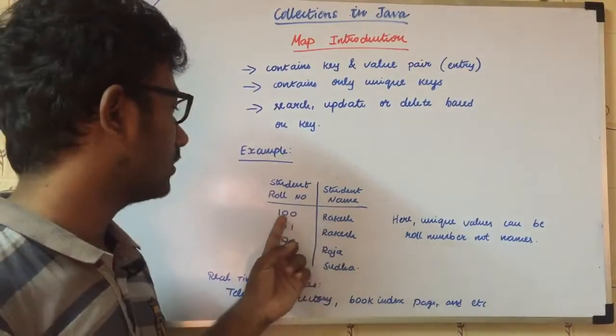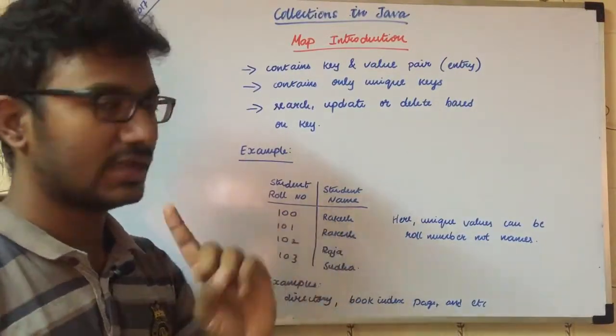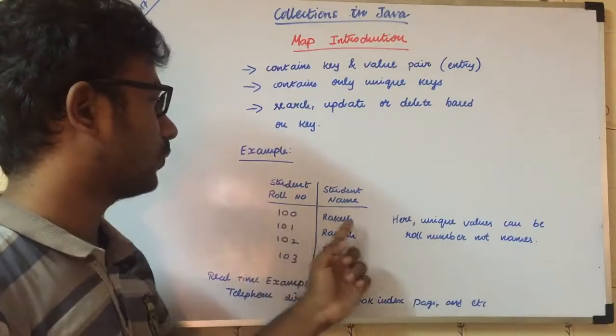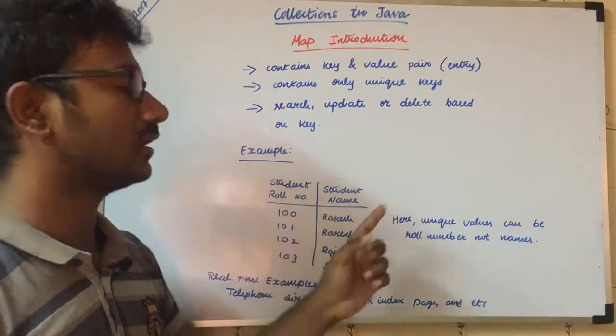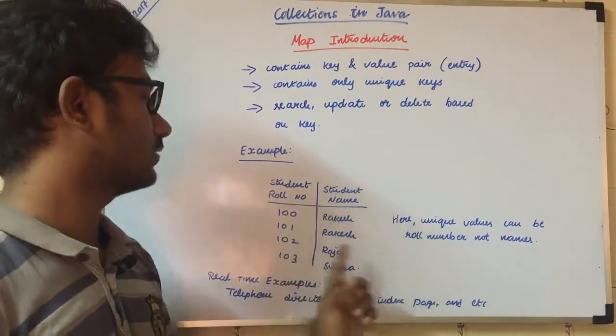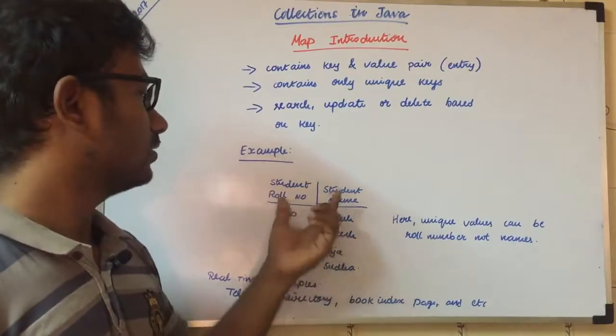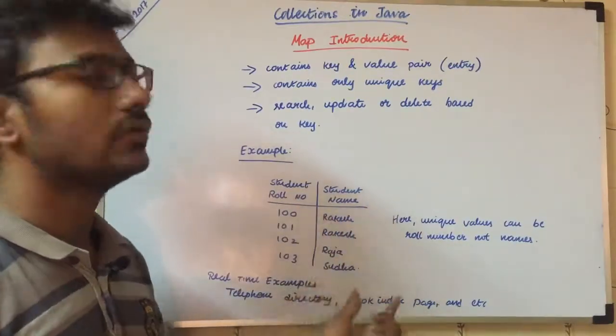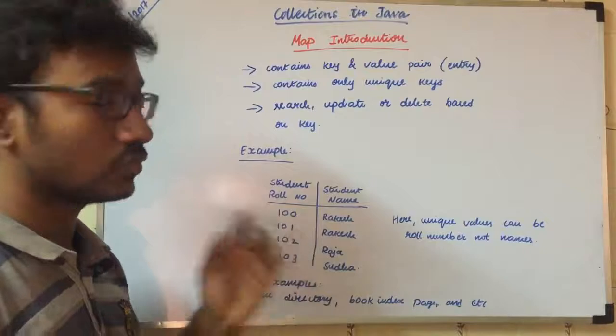Multiple unique numbers. Roll number 100 has one name. So 100 points to Rakesh, 101 points to Russell, 102 is Raja, and 103 is Sudha. So these are unique keys. The keys are unique.